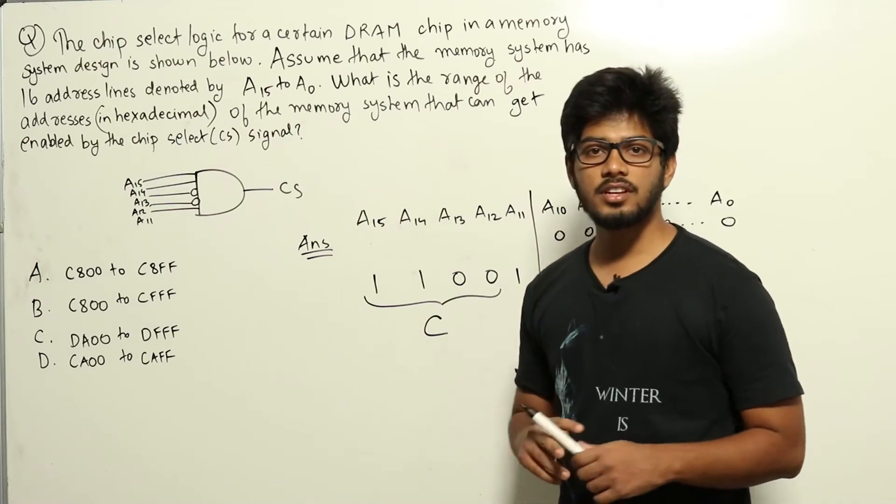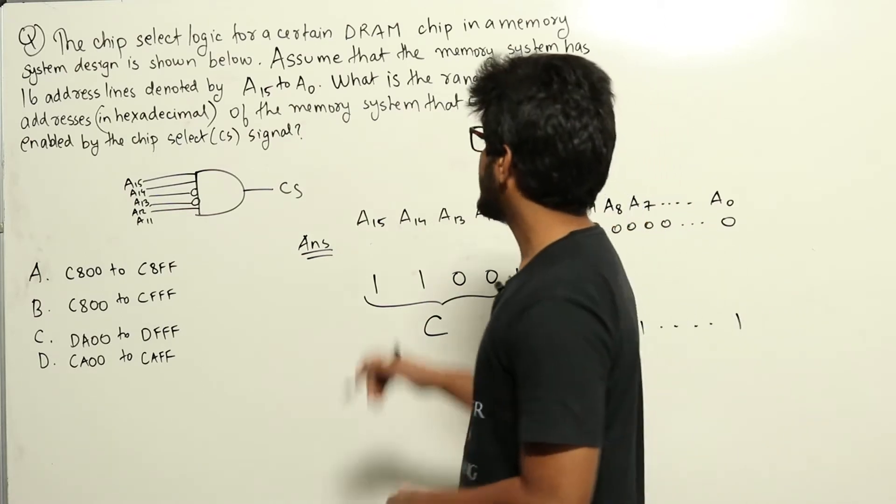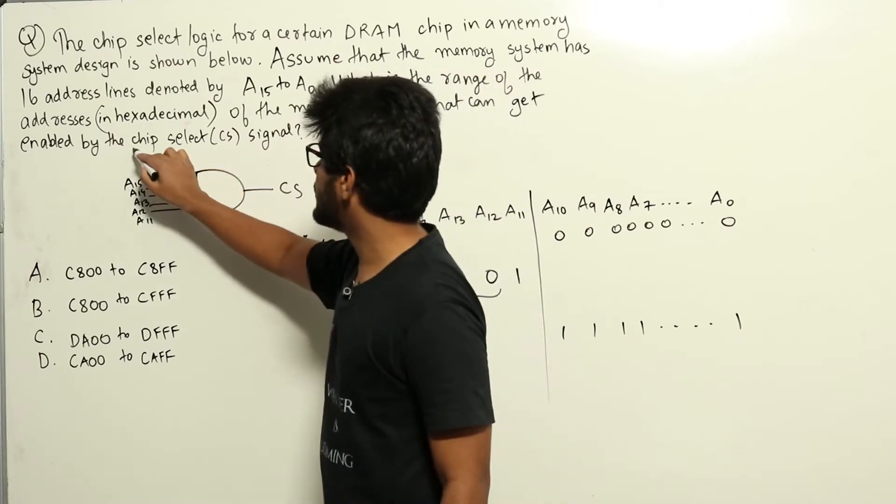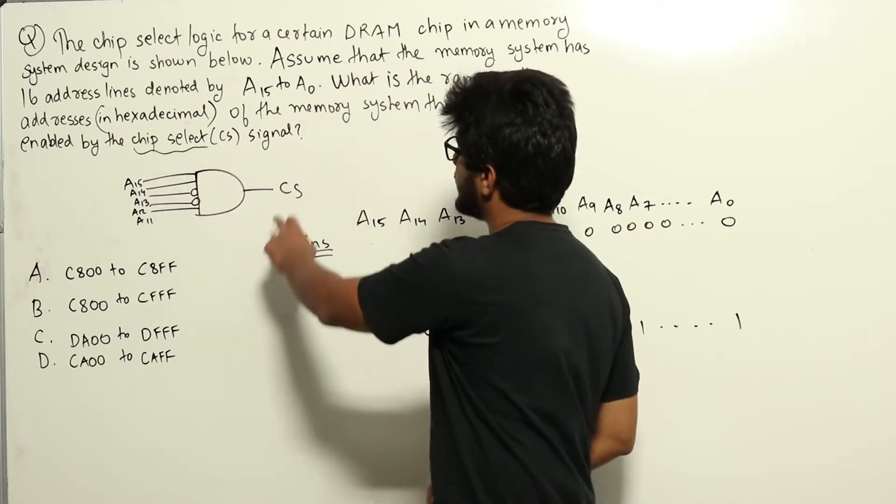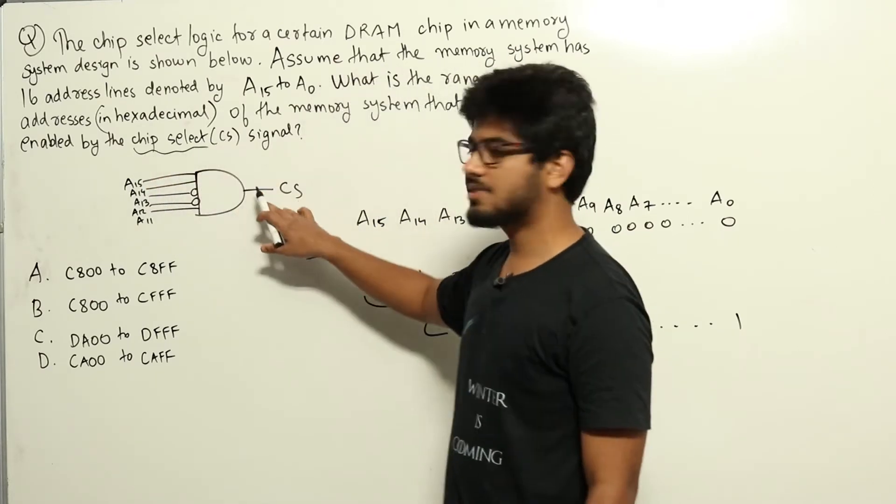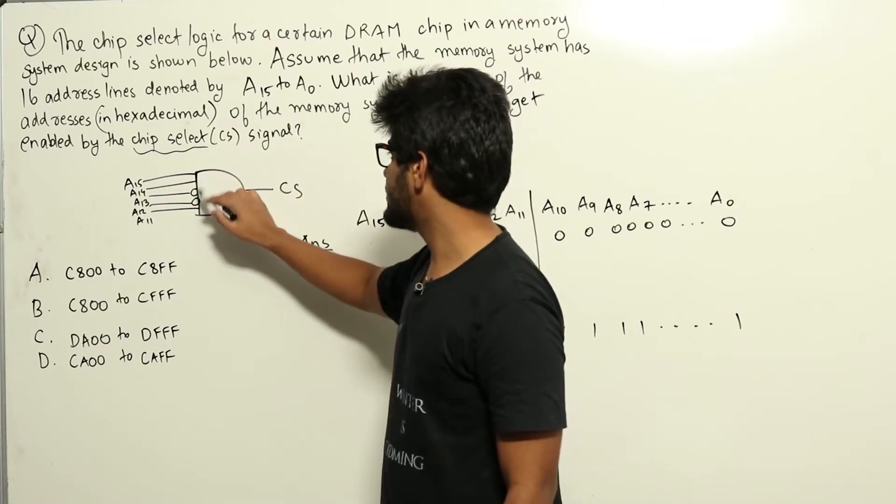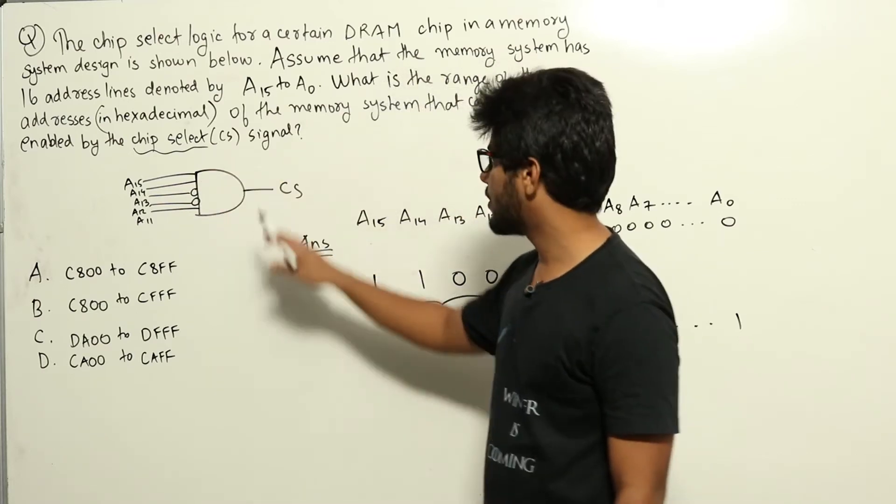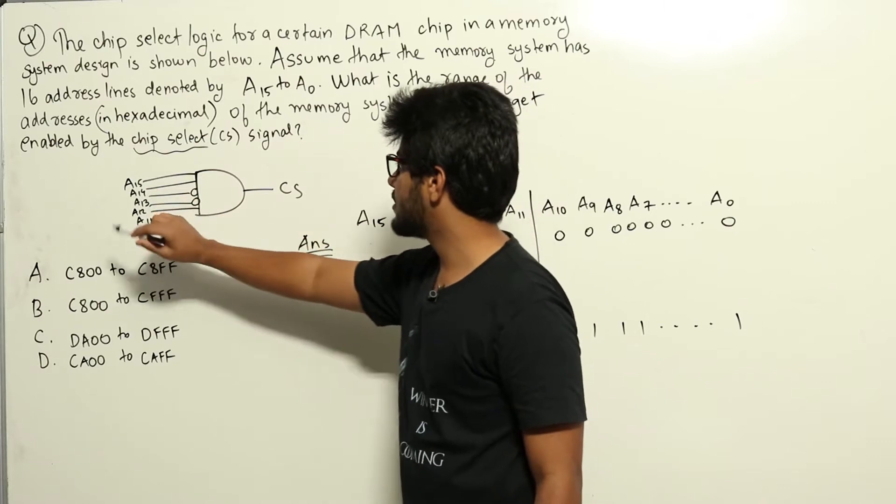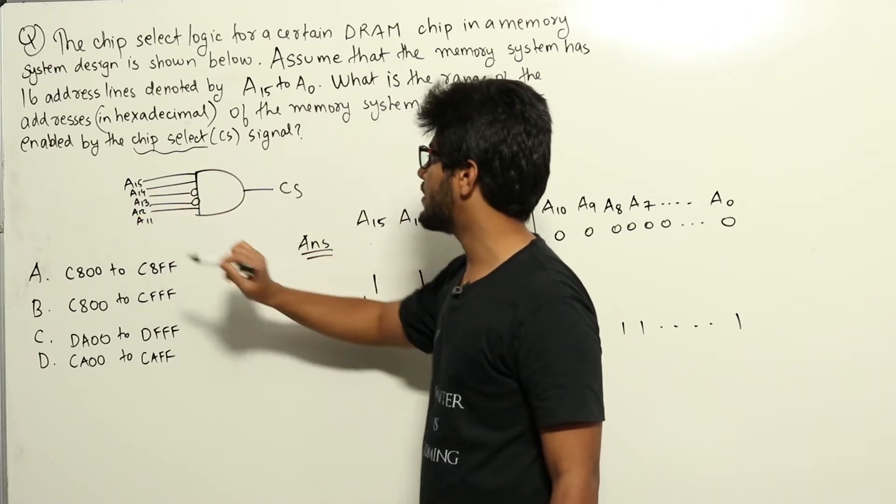This is a question coming from the digital logic section. In the question they have given us a particular signal called chip select which is given here, and this chip select signal is getting generated by this particular AND gate. To this AND gate we are giving the signals A15, A14, A13, A12, A11 as input.